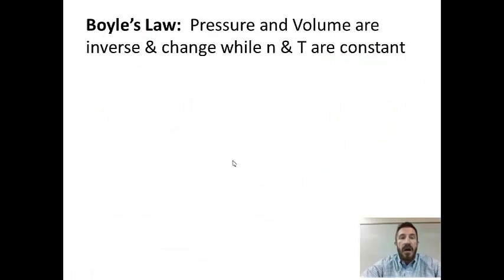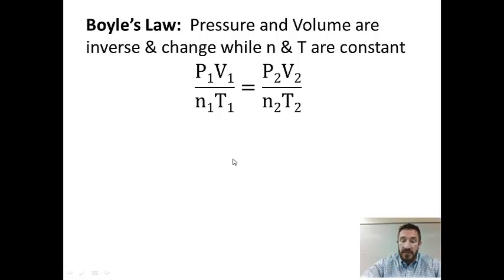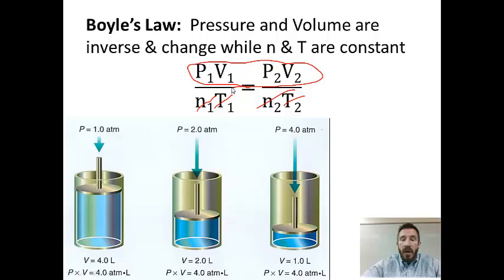First we're going to look at Boyle's Law. Boyle's Law is where pressure and volume are inverse and they change, while temperature and number of moles are constant. Starting from P1V1/N1T1 = P2V2/N2T2, since N and T are held constant, we remove them from the equation. What's left is Boyle's Law: P1 times V1 equals P2 times V2.